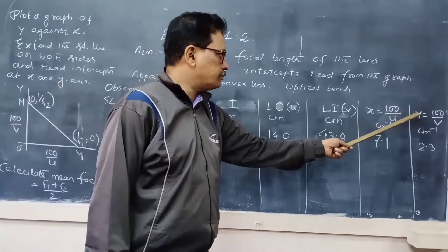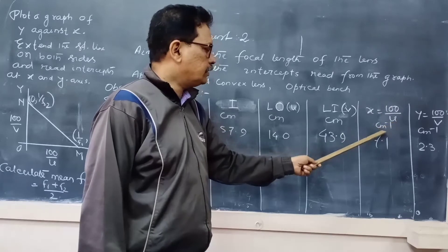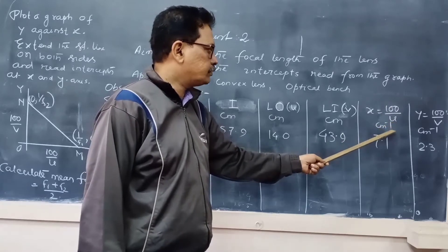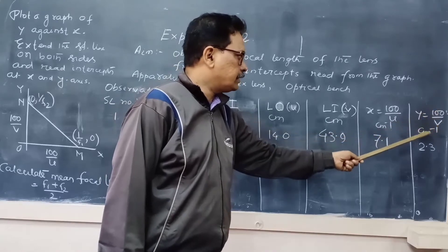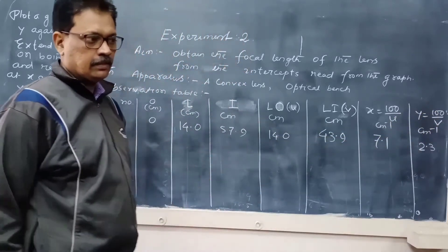Then two more columns: one for x equal to 100 by U, unit is cm to the power minus 1, and y equal to 100 by V, again cm to the power minus 1.